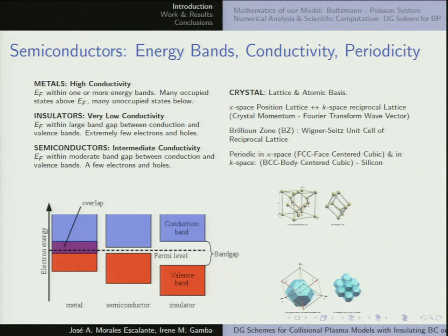The idea is that you have a background lattice and there are going to be collisions of the charge carriers — in this case the electrons — with that lattice, and that is the way the collisions come into our model. The problem is collisional transport in the context of semiconductors.